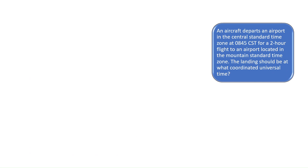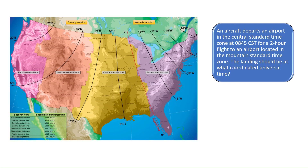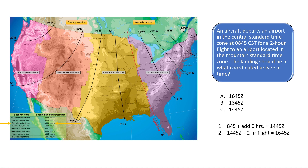Question 3. An aircraft departs an airport in the central standard time zone at 8:45 central standard time for a two-hour flight to an airport in the mountain standard time zone. The landing should be at what coordinated universal time (also known as Zulu time)? To solve this, first add six hours to the departure time: 8:45 CST becomes 14:45 Zulu. Then add two hours of flight time to get the estimated arrival time of 16:45 Zulu.